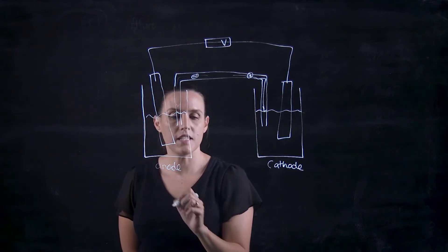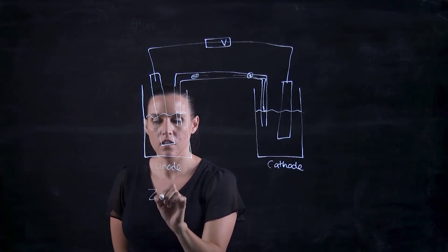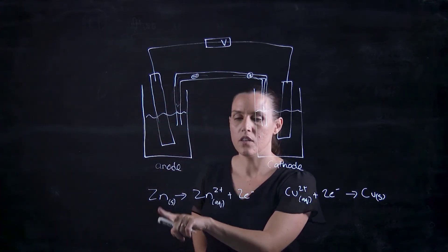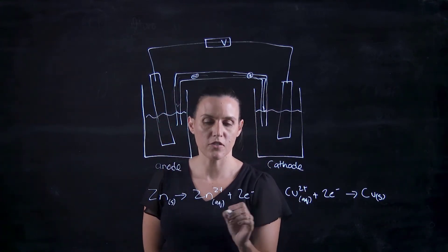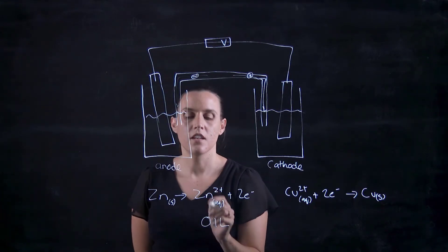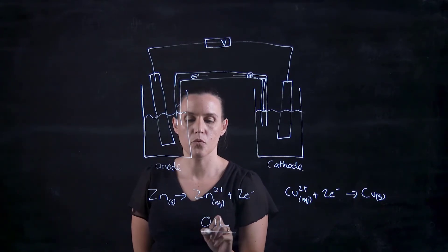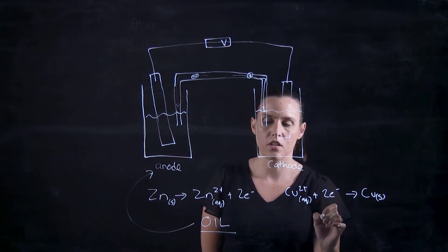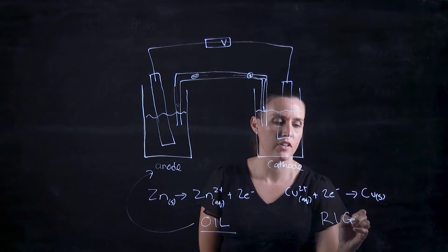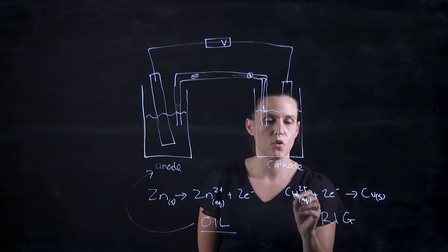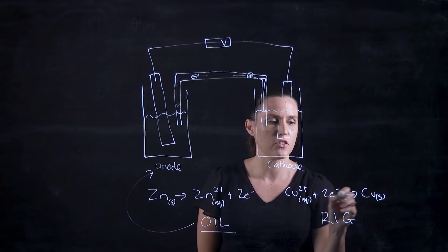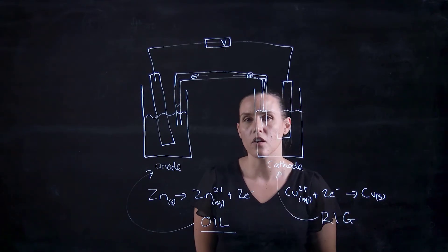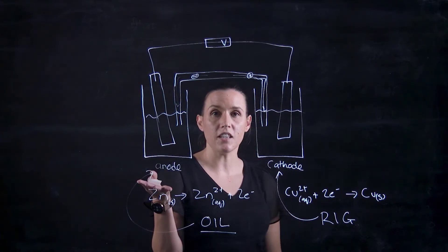For this example, we've got zinc that's losing electrons. Oxidation is loss, so this is the oxidizing which belongs at the anode. At the cathode, we've got reduction, which is gain of electrons—your copper 2+ gaining electrons to become copper solid. Reduction occurs at the cathode. Oxidation at the anode, reduction at the cathode.